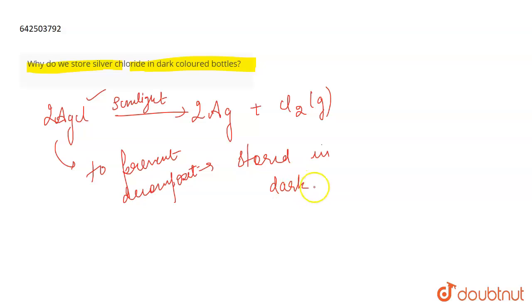The light cannot reach the silver chloride when it is stored in dark bottles, and hence no decomposition reaction can take place. So the major reason is to prevent the decomposition reaction.